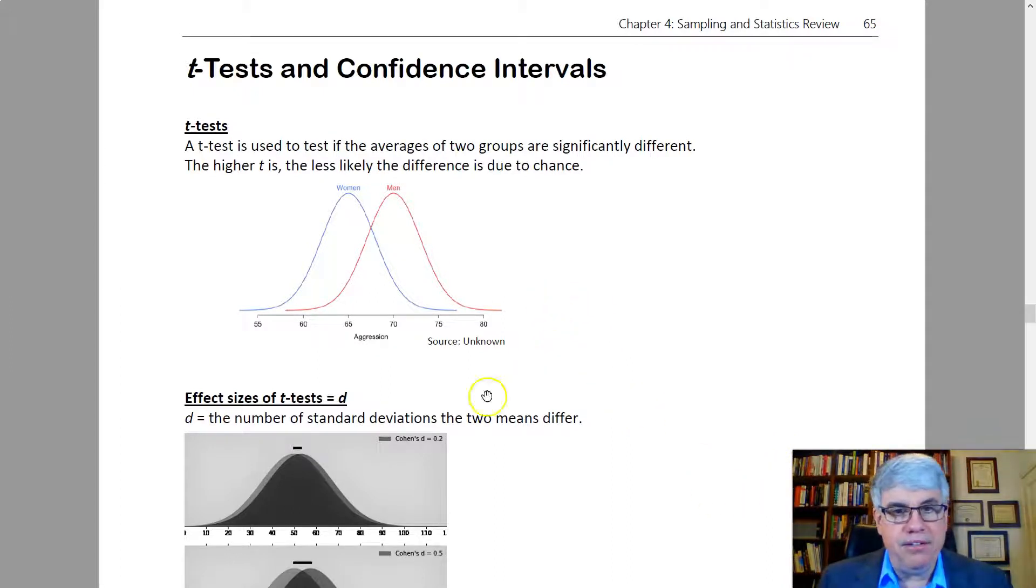So here we've got some data, two bell-shaped curves, describing the aggression levels of young adults. We have a big difference between women and men. Women are the blue here, and their average aggression is about 64. And men, using the scale, it looks like their average aggression is about 71.